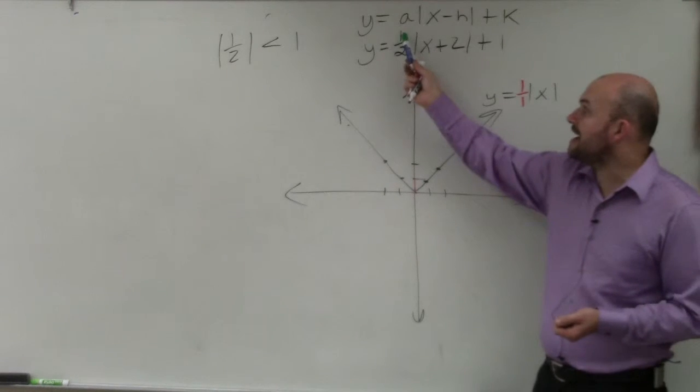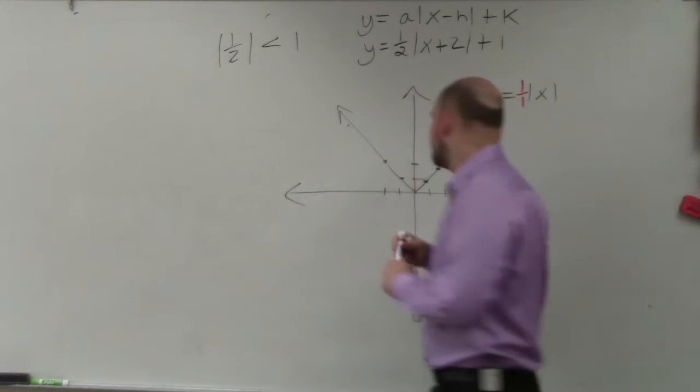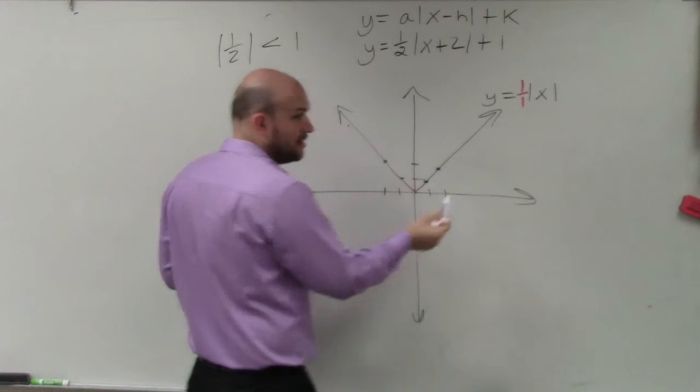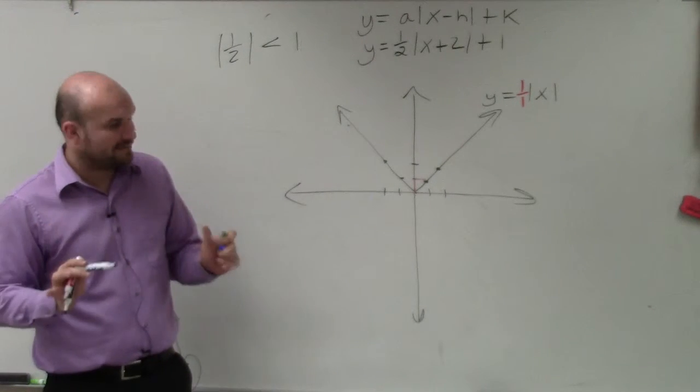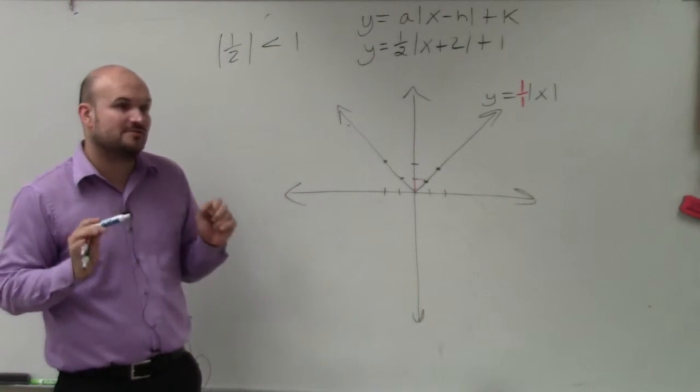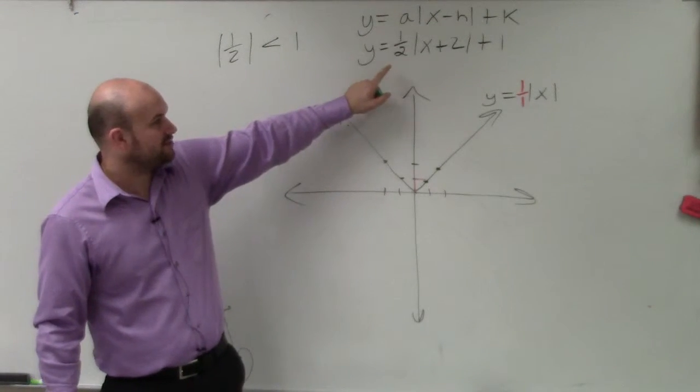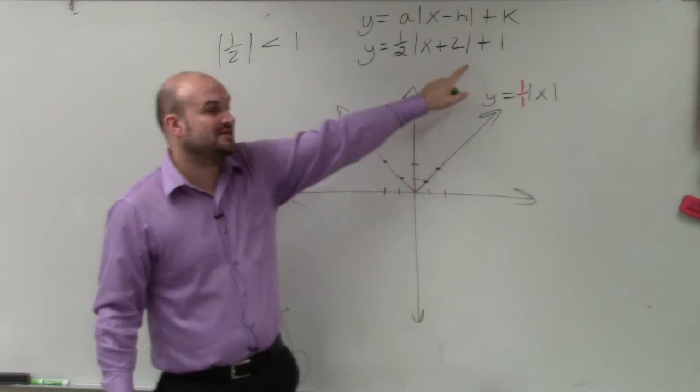So now, if I have 1 over 2, what that's going to do is from my vertex, it's going to go up 1 over 2, all right? But I actually kind of got ahead of myself here, because we should find the transformations first. So let's go back to a. I started talking too early. Let's go into what is h and k going to do.